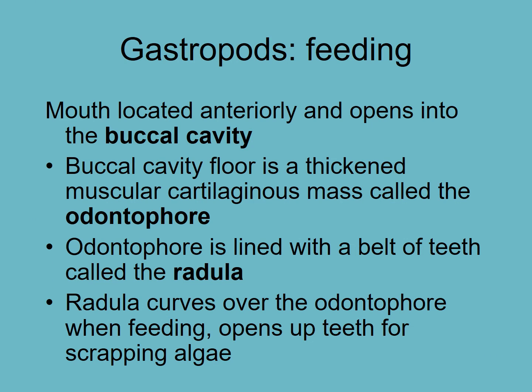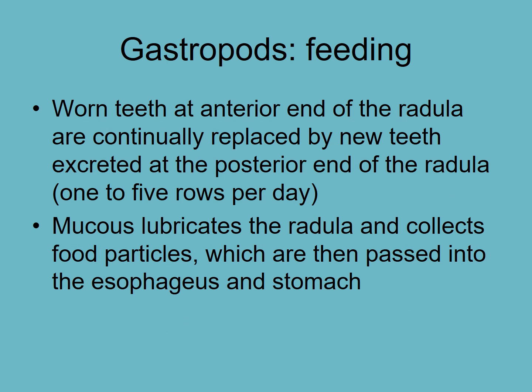And finally, with gastropods, we look at the feeding. They pretty much all have a radula, as we've talked about in the overview video. They have this thing called the odontophore, which is essentially a hard backing for the radula so that it helps press the radula down on whatever it is scraping. And so they're like chipmunk teeth, where the worn teeth are continuously replaced and new teeth are made at the front of the radula. So that's it for the gastropods — we'll see you in the next mollusk video.